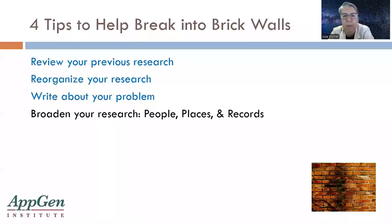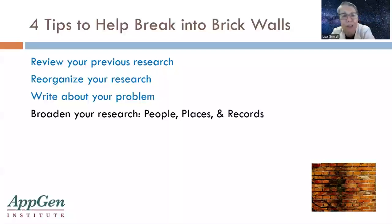The last tip is perhaps you've been too focused on a single person. Broaden your research to other family members, their neighbors, and friends. Your ancestors did not live in isolation — they interacted with others, and the records of those other people just might mention your ancestor. Keep track of people mentioned in obituaries, those who witnessed wills and deeds, and the neighbors on census records.